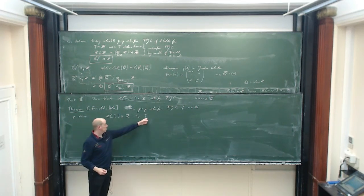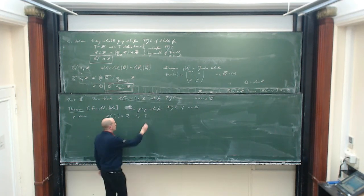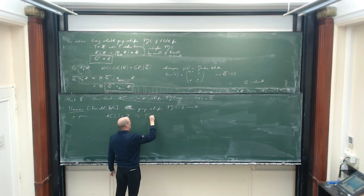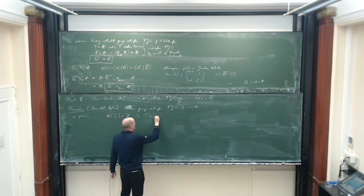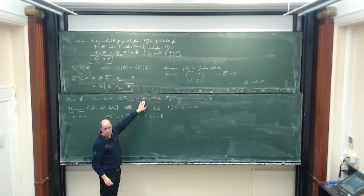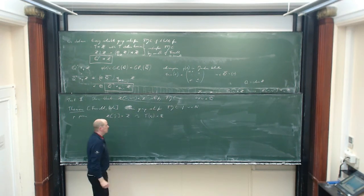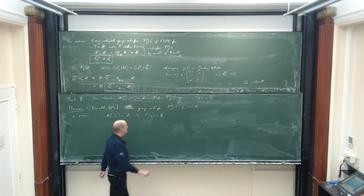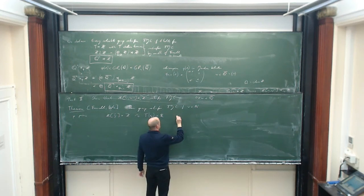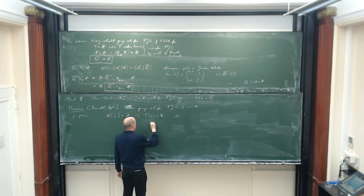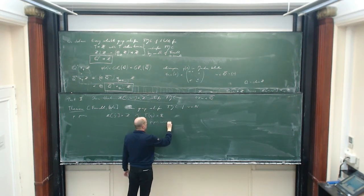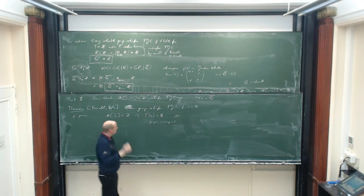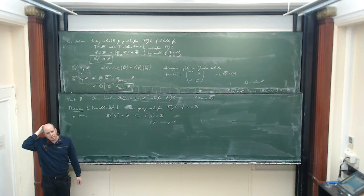We have an action here, and then an action on the real numbers given by projection onto the integers, and then the integers act on a real line. It turns out that this action is very nice: it's proper and co-compact. But there's a problem because it's not isometric, and there's a way to make it isometric. We have to change this metric a little bit — we have to use a warped product, a modified metric.